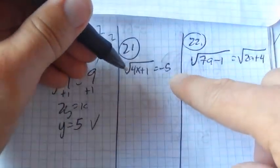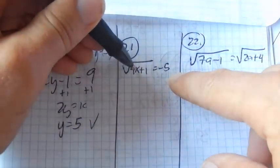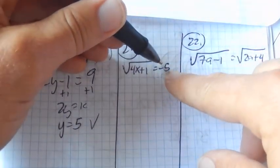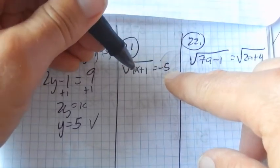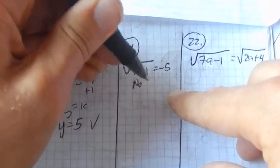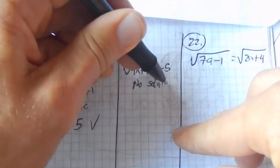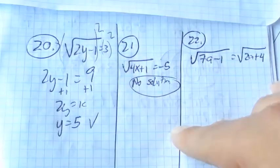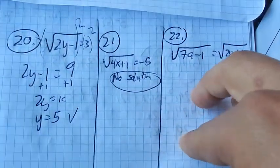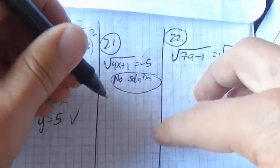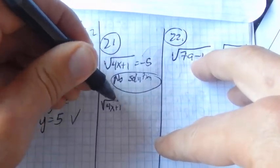Alright, so 21. Notice I'm taking the square root of something and getting a negative answer. That's not going to happen. So I might notice right away there's no solution and just be done and move on. If I don't notice it and go through the steps, I will get an answer, but it's a false answer.